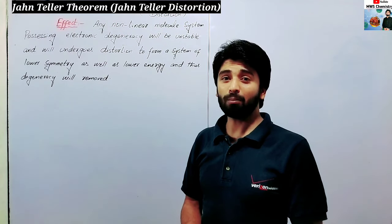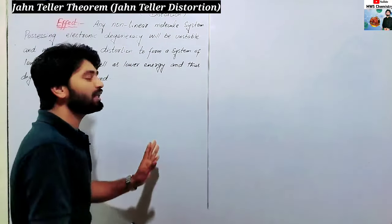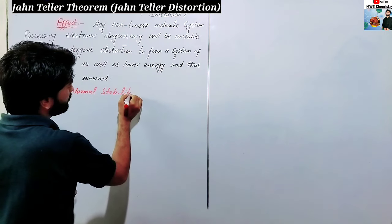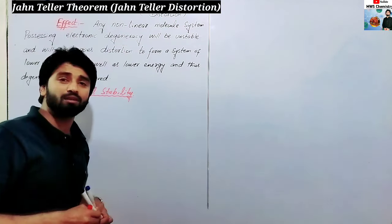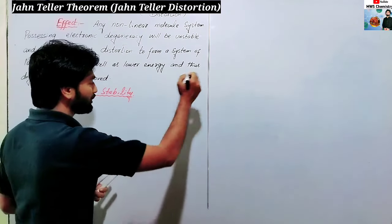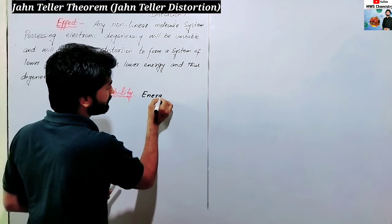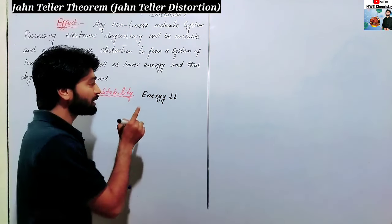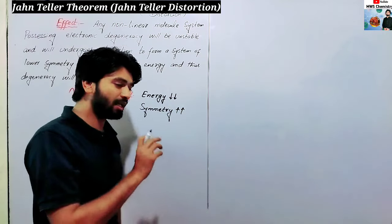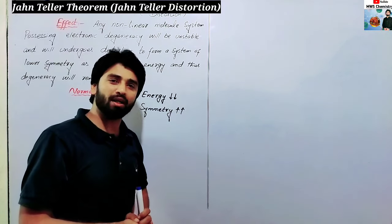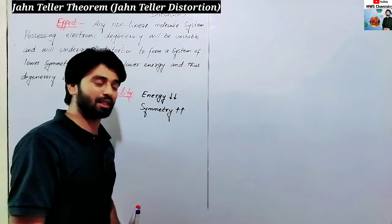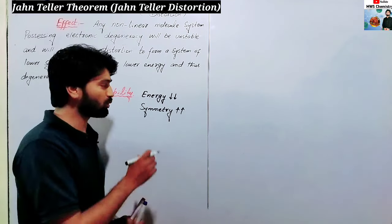Now the normal stability principle states that energy is at a minimum and stability is at a maximum when symmetry is maximum. If we talk about a circle, the center of the circle is equidistant from all points — the circle is very symmetrical. So normal principle: symmetry is maximum, energy is minimum, stability is maximum.